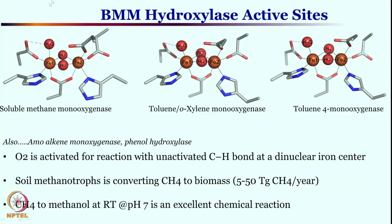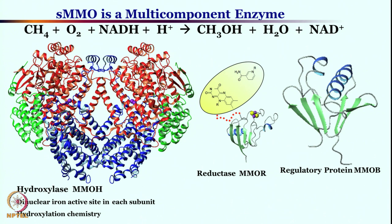In all these cases molecular oxygen is activated at the iron center and subsequently utilized for unactivated C–H bond functionalization. This active site can convert the greenhouse gas methane into methanol, which is a big part of the carbon cycle. A huge amount of methane can be converted to biomass — biomass generation has great implications through this methane monooxygenase enzyme. These are multi-component enzymes, meaning many different components are required for complete reactivity.